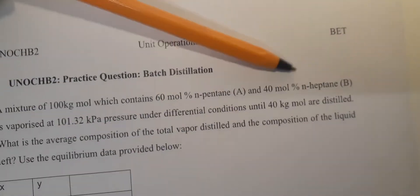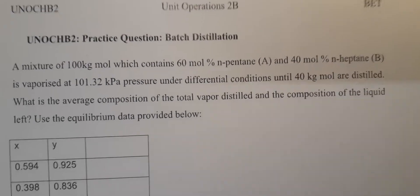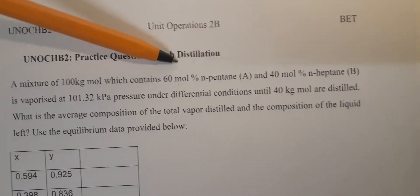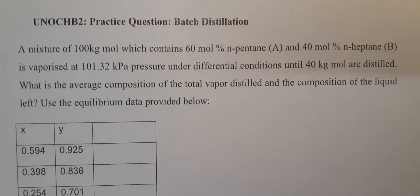So heptane is longer than pentane, which means heptane has stronger intermolecular forces compared to pentane, hence n-pentane will be the more volatile component.